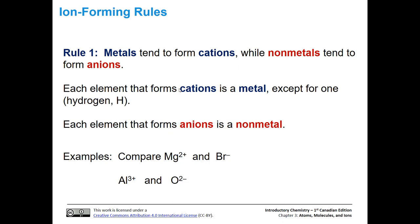Every element that forms cations is a metal, except for hydrogen, which forms a plus one cation. Each element that forms an anion is a non-metal, and anions have excess electrons which gives them an overall negative charge. The electrons that the metal had, when transferred to the non-metal, cause the metal to form a cation and the non-metal to form an anion.